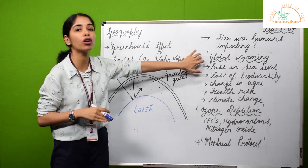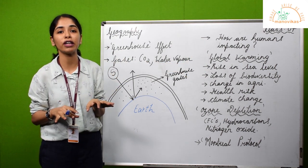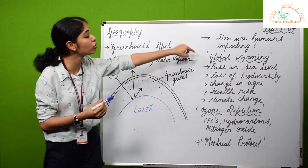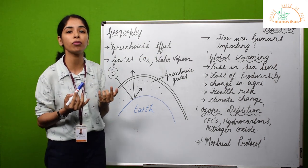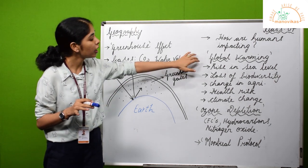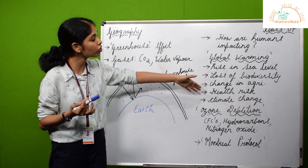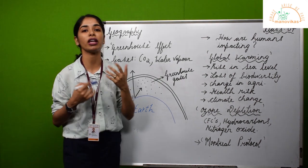All in all, we need greenhouse effect to survive, but when greenhouse effect further leads to global warming, that becomes a negative thing. When we have global warming happening, there is a chain of catastrophic events that happen on the earth. I mentioned some here, like there can be rise in sea level.